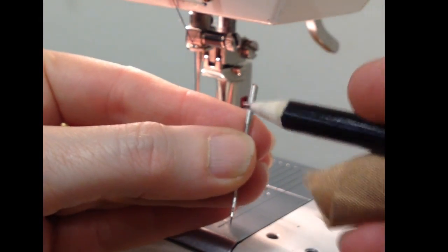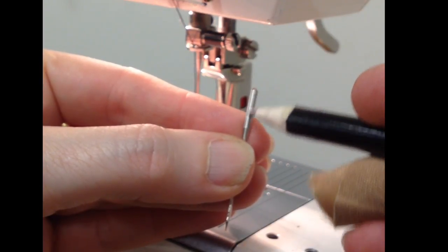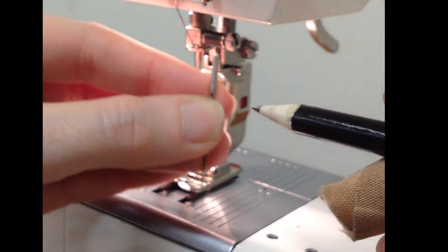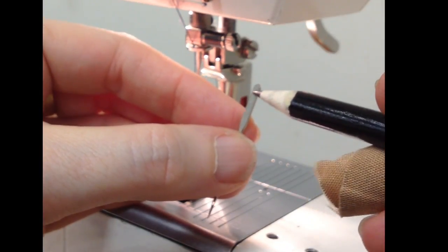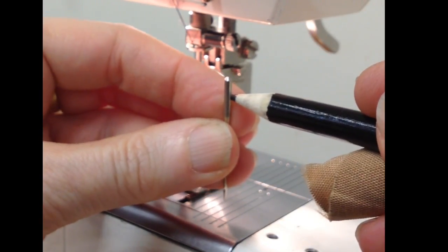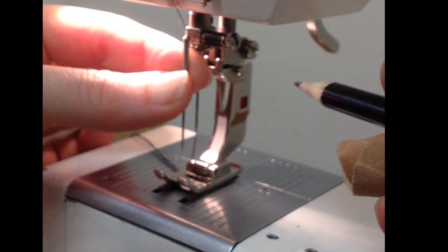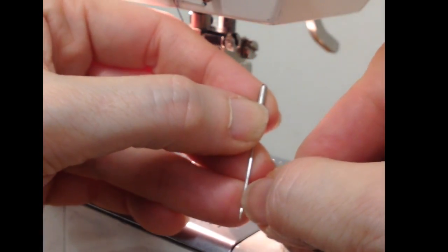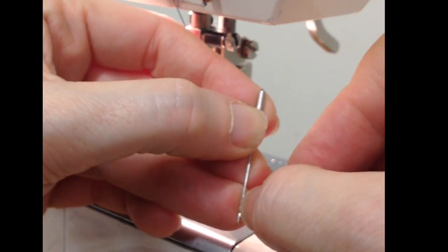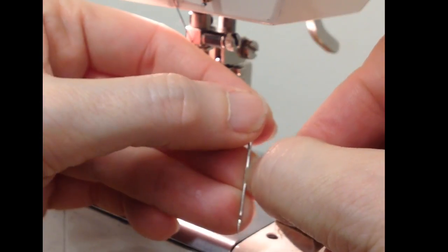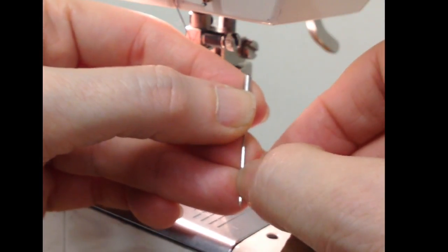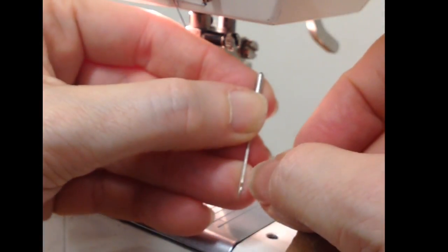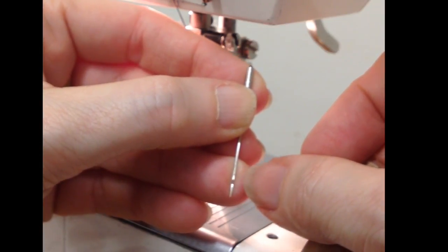There are some identifying parts of the needle that you need to know about. The thicker shaft at the top opposite the pointed end is the part that goes up into the machine. There's a flat back to that shaft and that flat back goes toward the back of the machine. That's how you know you're getting the needle into the machine correctly. Another thing to know about the needle is that on the front there's a very small groove on the front of the needle and that is a groove where the thread sits into as the needle goes down into the bobbin to create that stitch. And then down here at the pointed end is the eye of the needle.